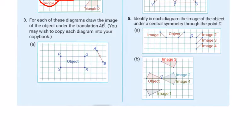So what's happening between A and B? Down two, across one. Down two, across one. I have my S, down two across one, I have my R, and down two across one, I have my Q. So I've got my new image, and we call that image P prime, Q prime, R prime, S prime.